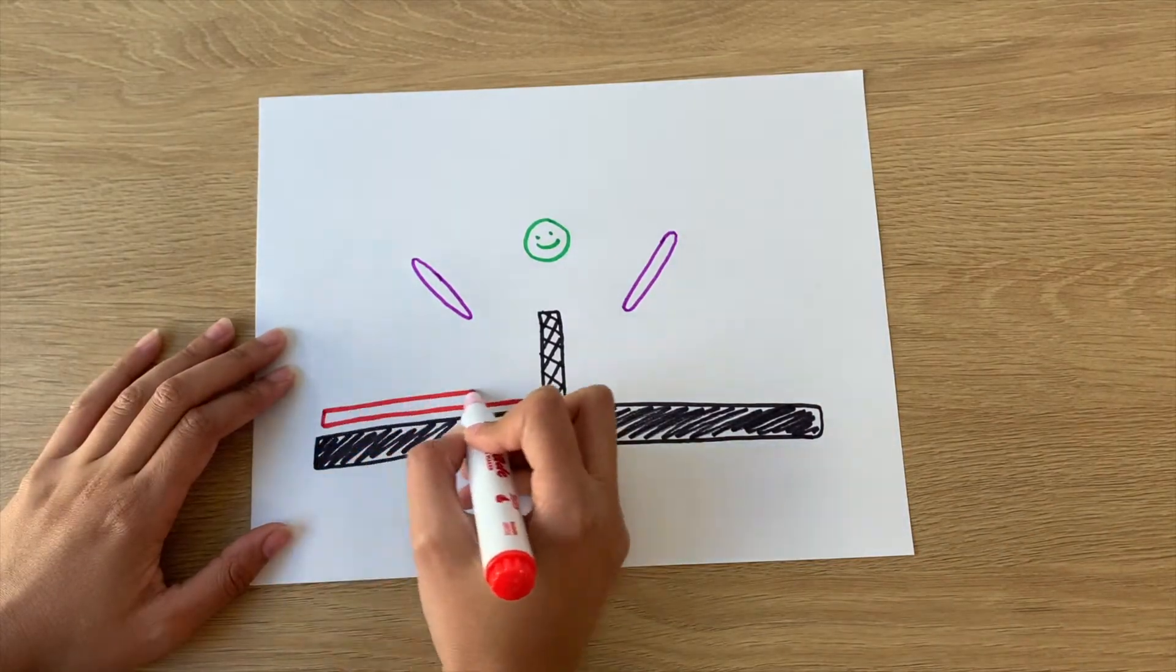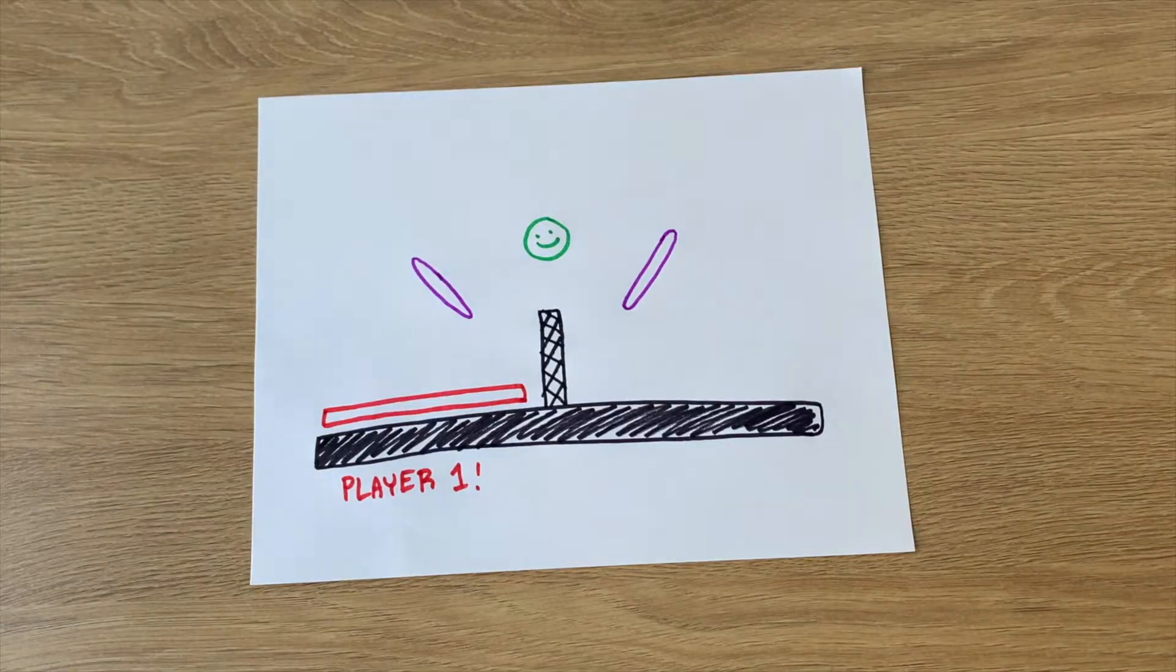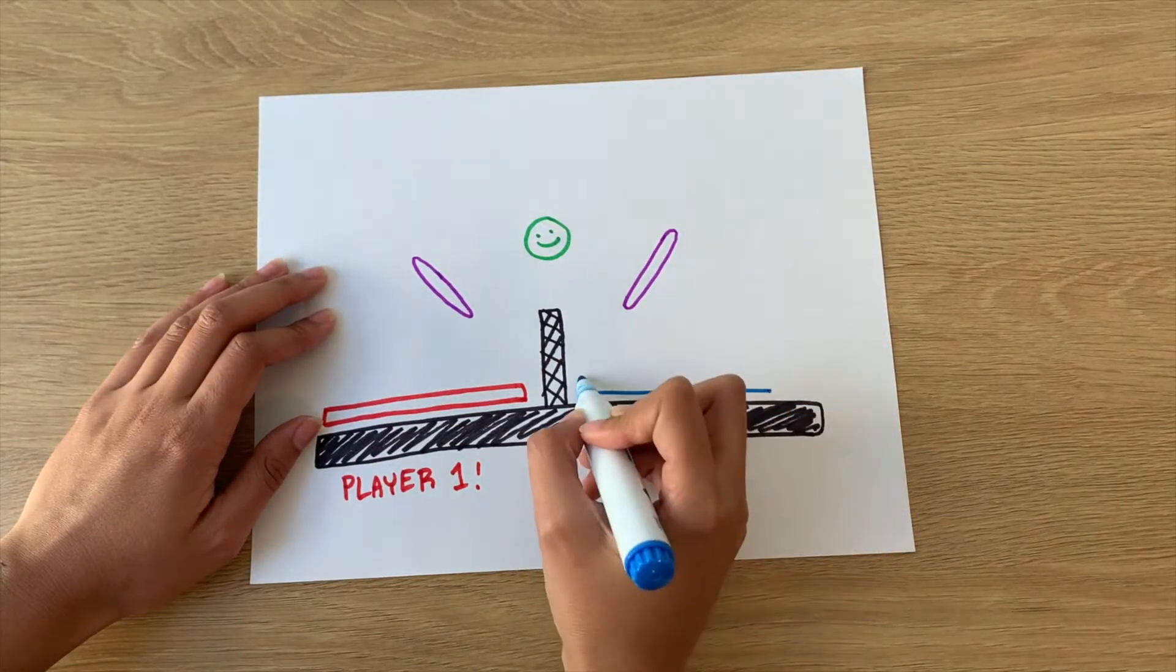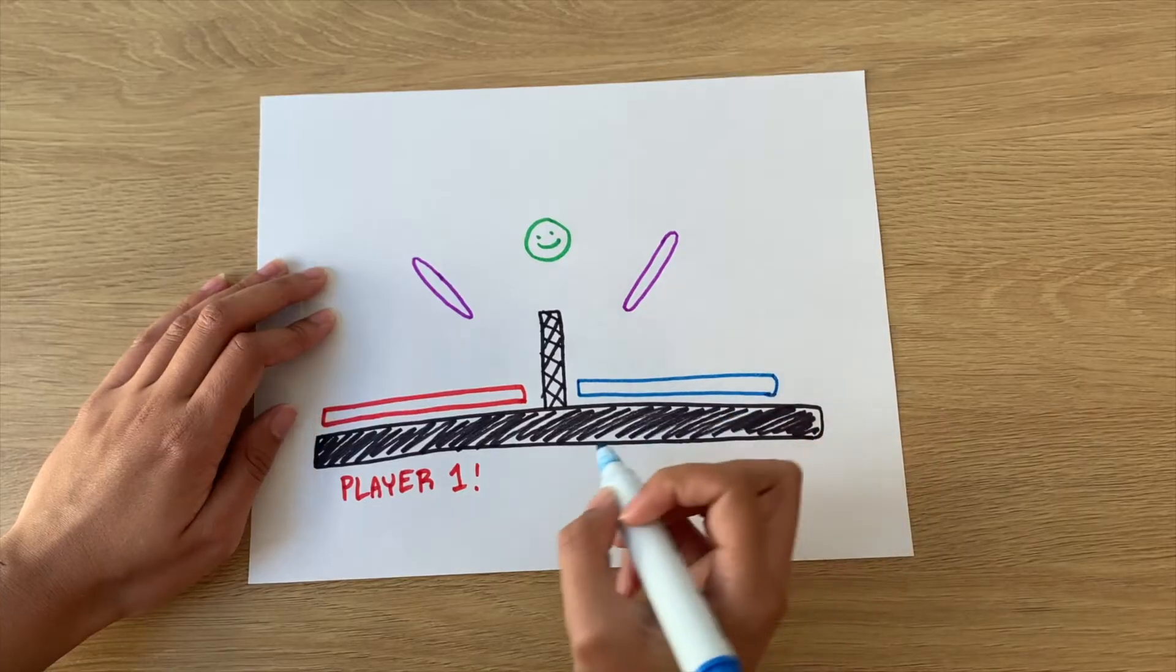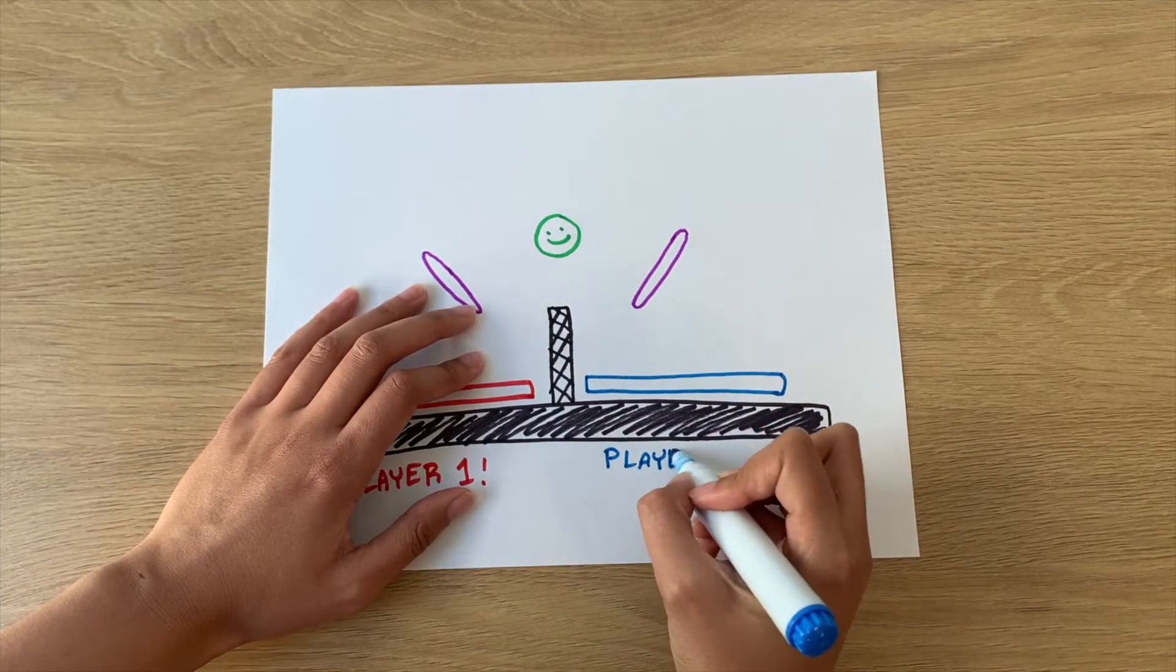Use red to draw the goal player 1 is aiming for. Use blue to draw the goal player 2 is aiming for. To make the game fair, try to draw both goals the same size. You can also draw more than one goal to add challenge.